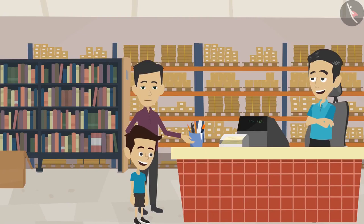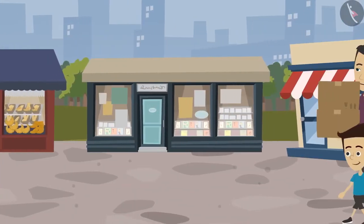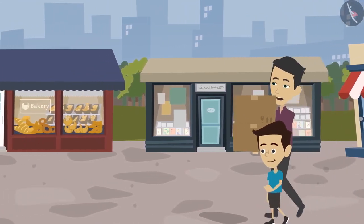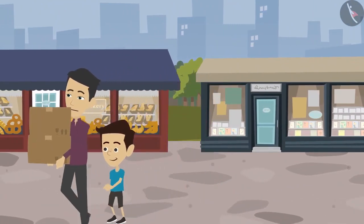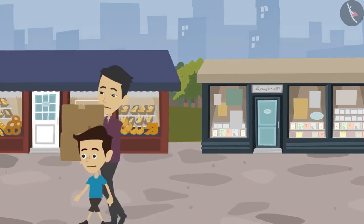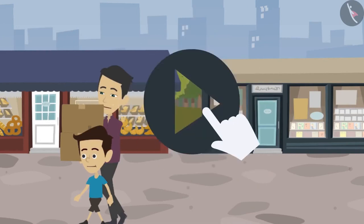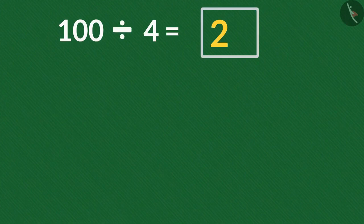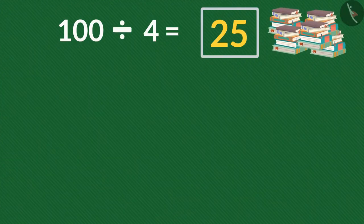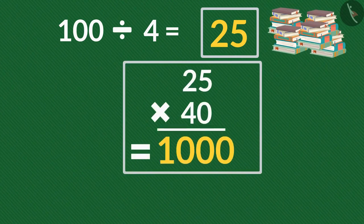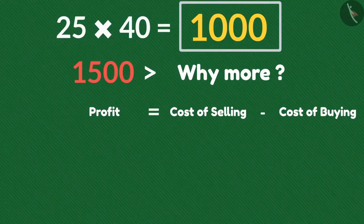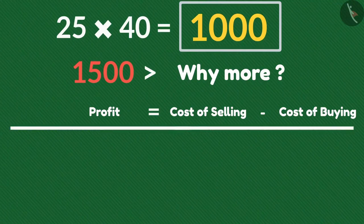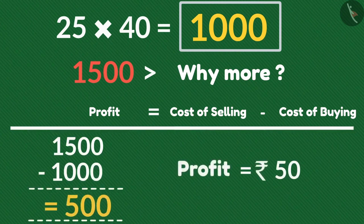Now take one fourth of the books and give them to your uncle, who will pay 1,500 rupees. 100 divided by 4 is 25 books. 25 books cost 1,000 rupees but we are taking 1,500 from Uncle — that is the profit. When we buy at a lesser price and sell at a higher price, we make a profit. Selling 1,000-rupee books for 1,500 gives us a profit of 500 rupees.